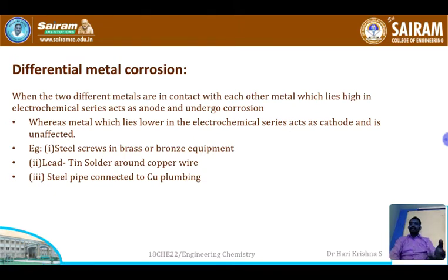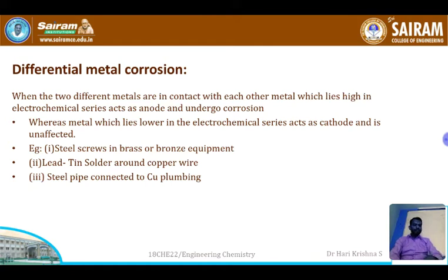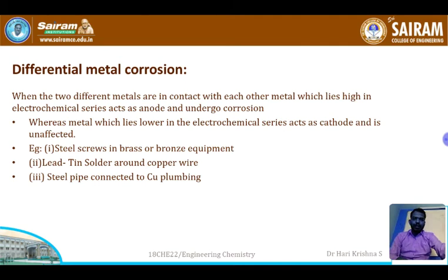Examples of differential metal corrosion include: steel screws in brass equipment, lead-tin solder around copper wire, and steel pipe with copper plumbing. Let me explain this with a diagrammatic example.